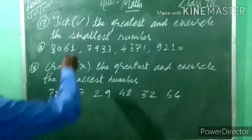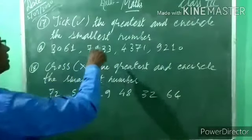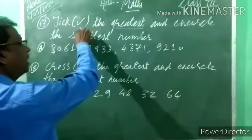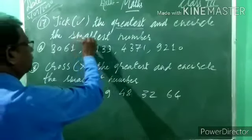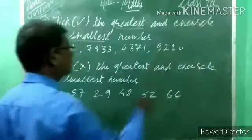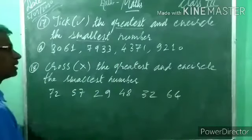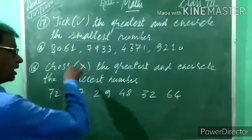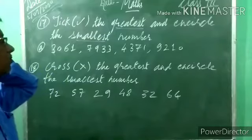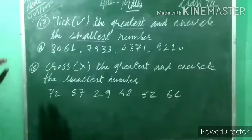What is there in example 17? Tick — write the greatest and encircle the smallest number. Means, for the greatest number, 'sabse bade number' you have to tick. And the smallest number, 'choti number,' you have to encircle. Encircle means draw a circle around it. Now, 4 different numbers are given, and from those we have to select one greatest and one smallest number.